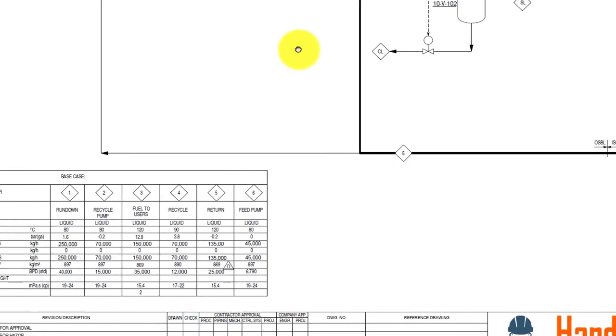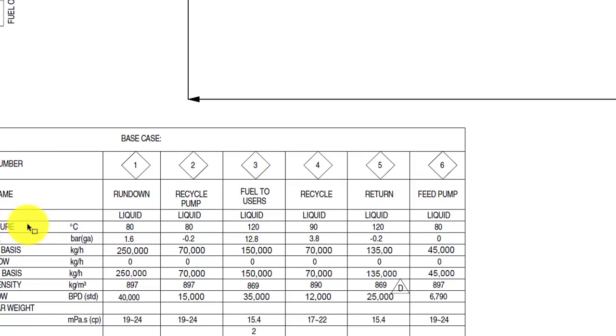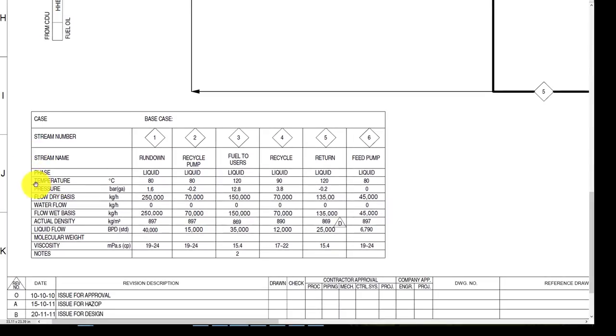Now let's look at the stream table. Lots of process parameters such as pressure, temperature, flow rate, and other details are given in this table. Have a look at it.